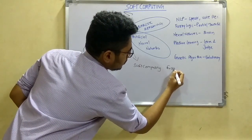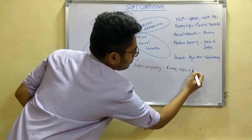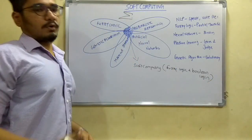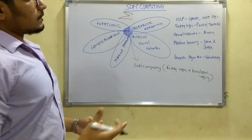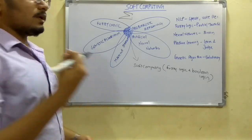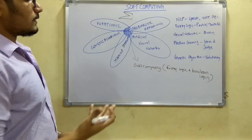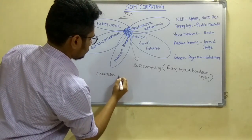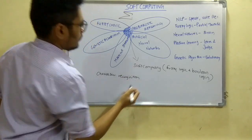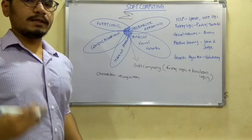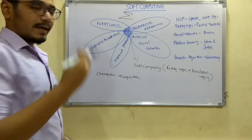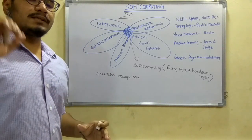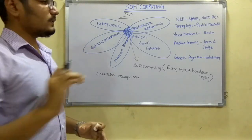So soft computing basically takes fuzzy logic plus Boolean logic as its input and processes it further for its desired output. From an application perspective, first we have character recognition — like OCR readings — where soft computing is used for identification in the context of robots interacting with artificial intelligence.